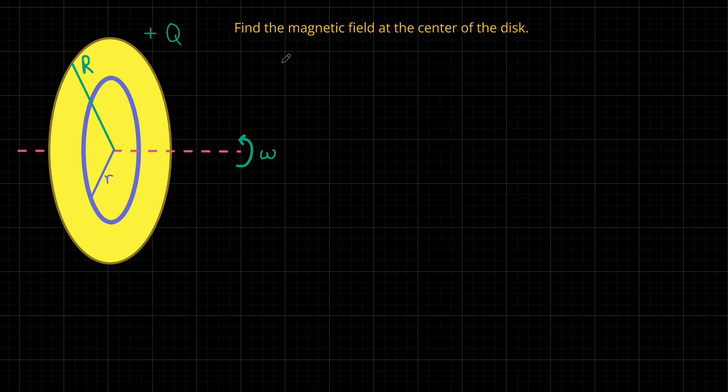And the magnetic field of the disk, let's say capital B, is going to be equal to the sum of the magnetic field due to each ring, which I'm going to call dB. So the magnetic field due to a single ring will be dB. So this is an integral, basically.